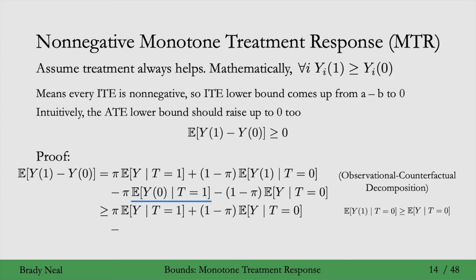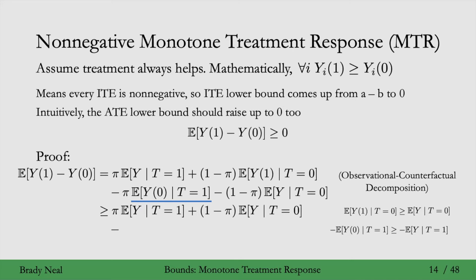Now we want to lower bound the other counterfactual quantity, which has a negative sign in front of it. The monotone treatment response assumption gives us the inequality direction. If we multiply by negative signs, that flips the inequality. Finally, we use consistency on the right-hand side to get the negative expected value of Y in the treatment group. That gives us a lower bound on this counterfactual quantity in terms of an observational quantity, so we plug this in.